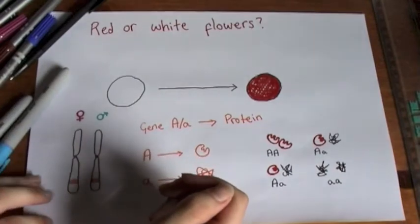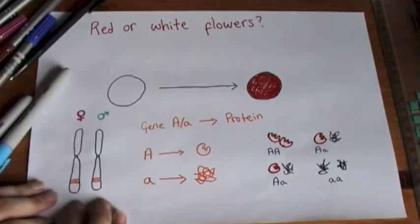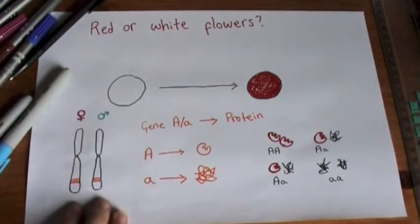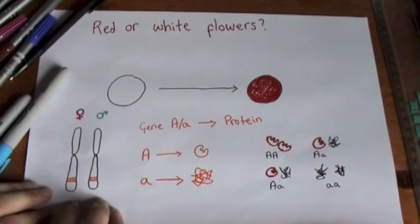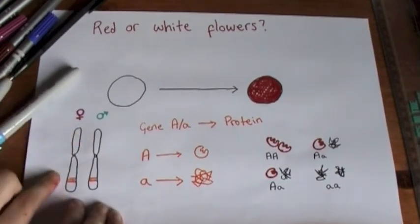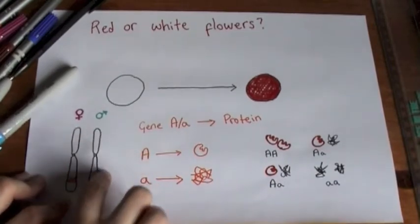So in each cell in your body you have two copies of each chromosome, or let's pretend that we're plants. We have two copies of each chromosome, one's from the mother, so this is the maternal chromosome, and one from the father, the paternal chromosome.